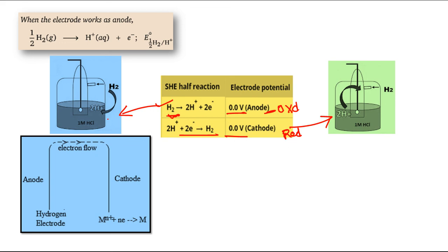First we will see the example where SHE is acting as anode, meaning oxidation occurs. ½ H₂ is converted to H⁺ and one electron — that is the balanced half reaction. The corresponding anode value is represented accordingly. By general convention, anode is written on the left-hand side and cathode on the right-hand side. Here hydrogen is at the anode and electron flow is from anode towards cathode.